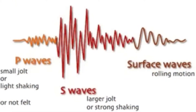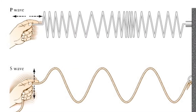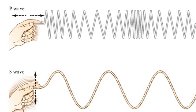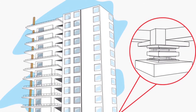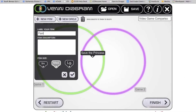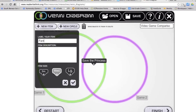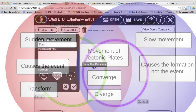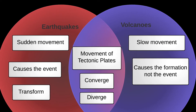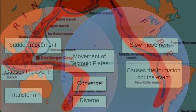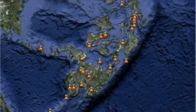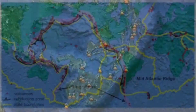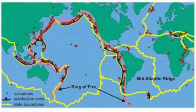Students will also learn about the different types of seismic waves, imitate seismic waves using a slinky, and evaluate how buildings are designed to withstand earthquakes. They will create an interactive Venn diagram comparing and contrasting volcanoes and earthquakes, and explore the Pacific Ring of Fire by plotting points of earthquake and volcano locations using Google Earth and looking for patterns.